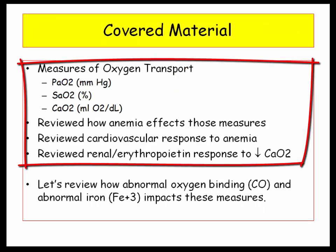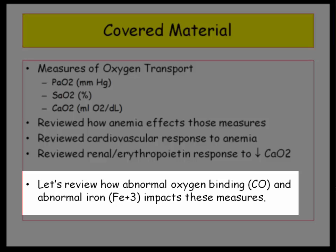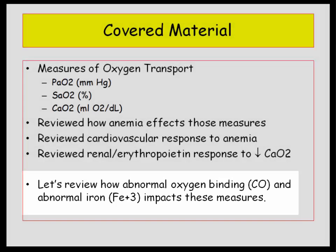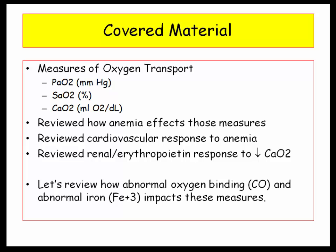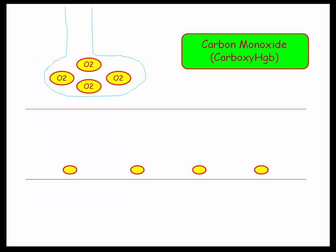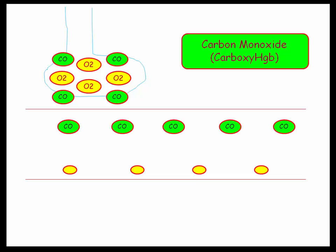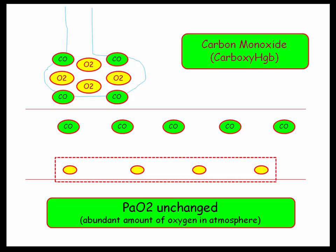We've covered a lot of important material so far. We'll conclude with examples of abnormal oxygen binding in the form of carboxyhemoglobin and methemoglobinemia. These questions predominantly reflect abnormalities of oxygen content and saturation. Let's start with carboxyhemoglobin. Here we have a normal alveolus with normal oxygen and normal PaO2 — that is, there's a normal amount of dissolved oxygen. Now we'll breathe in carbon monoxide, which readily diffuses into the blood. Note there is no change in the amount of dissolved oxygen, as there is still abundant alveolar oxygen present.